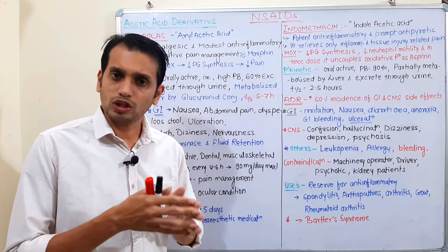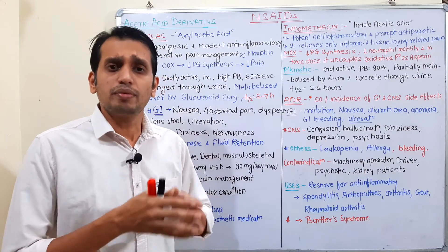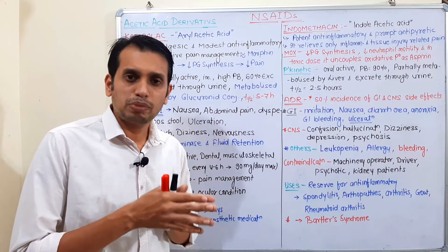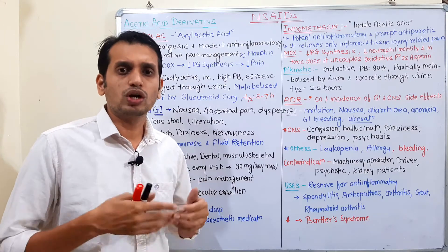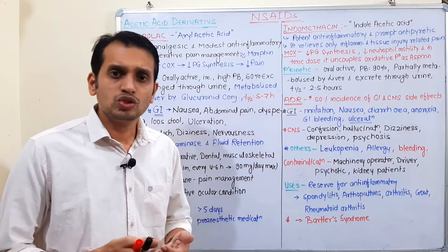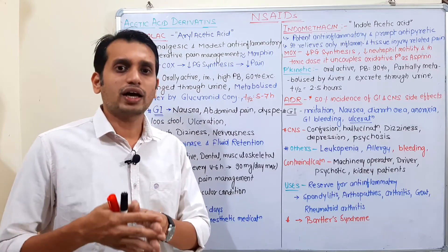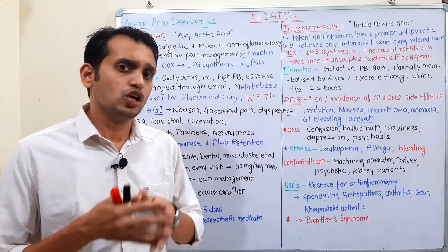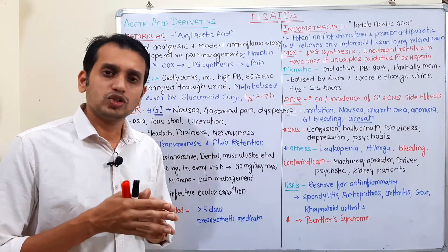NSAIDs work by inhibiting the cyclooxygenase (COX) enzyme, which leads to decreased synthesis of prostaglandins. Due to decreased prostaglandin production, inflammatory processes are reduced. Inflammation is basically a local response against cell injury and tissue injury, and if it becomes long-term, it can result in inflammatory disease — in which case these drugs are used.